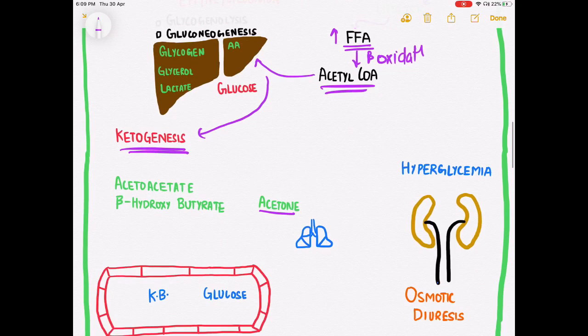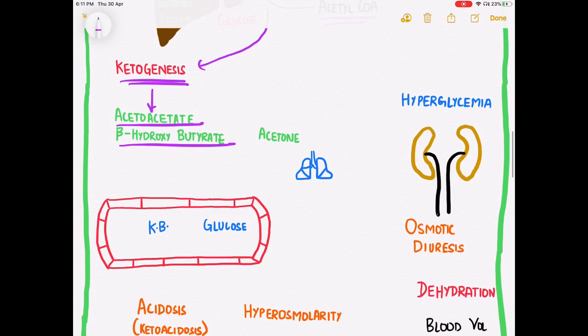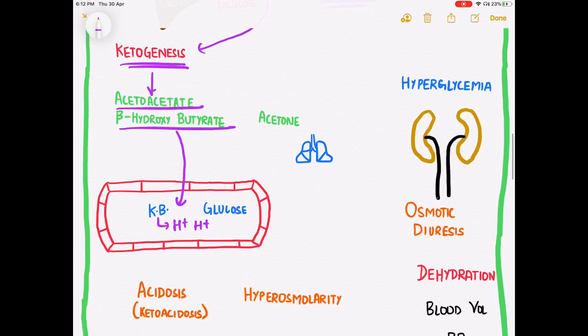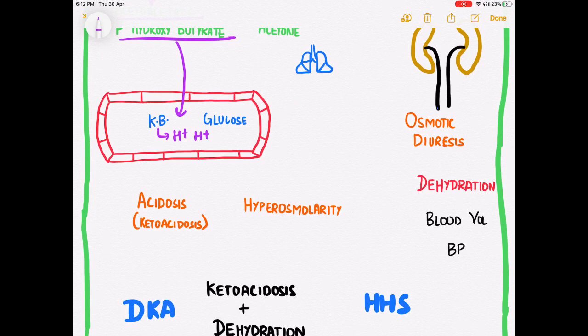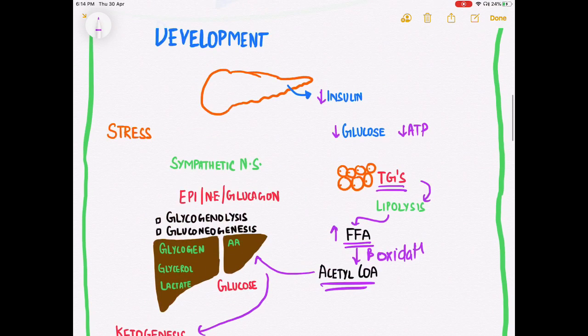This acetyl-CoA goes to the liver and undergoes the process of ketogenesis. This leads to formation of various ketone bodies such as acetoacetate and beta-hydroxybutyrate. These ketone bodies enter the bloodstream and release various proton ions. Since there is excessive accumulation of proton ions in the blood, this situation is known as acidosis, and since it is caused by ketone bodies, it is known as ketoacidosis.